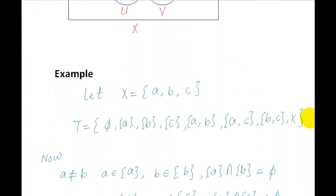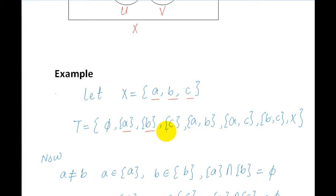So let's look at the example. Let X equal {A, B, C} — a ground set having three elements A, B, and C — and let the topology T equal {empty set, {A}, {B}, {C}, {A,C}, {B,C}, and the ground set X}. This is a topology on the set X.